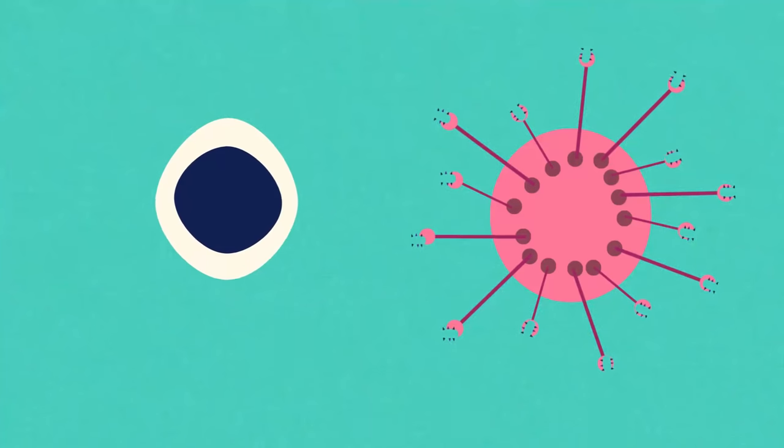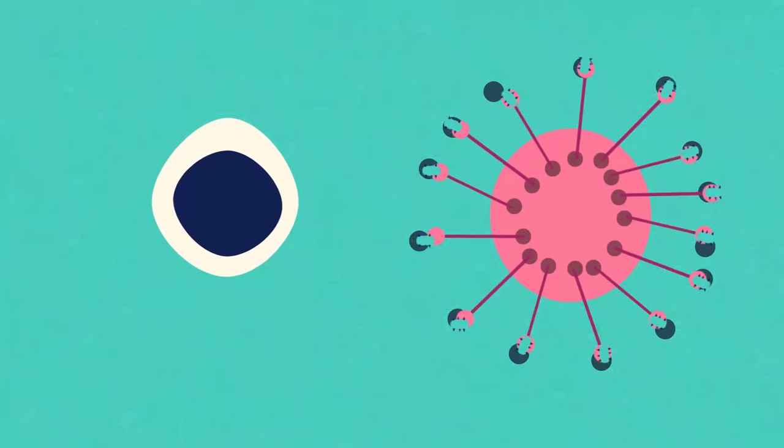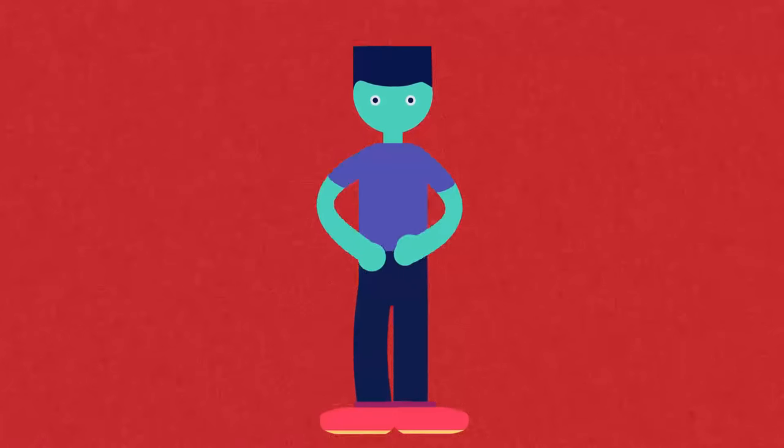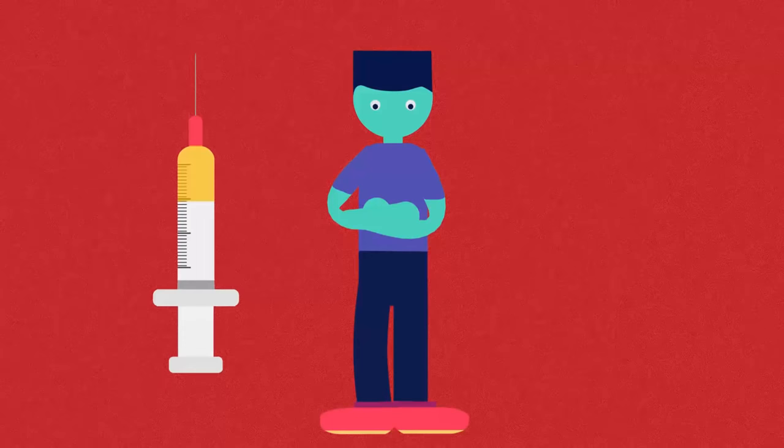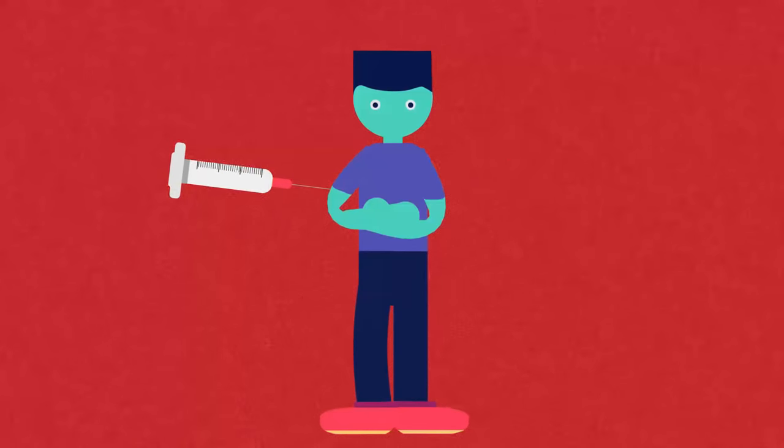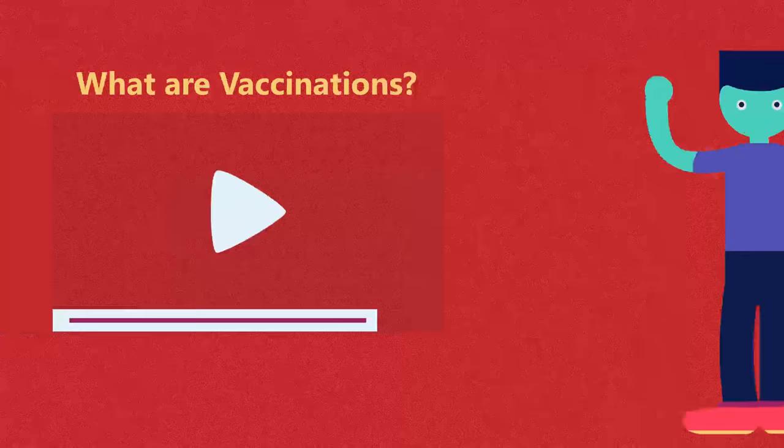Other lymphocytes produce anti-toxins which combine with the invader's toxins and make them harmless. Sometimes the body cannot produce antibodies naturally or fast enough and so we can have vaccinations to help us out. We will look at vaccinations in another video.